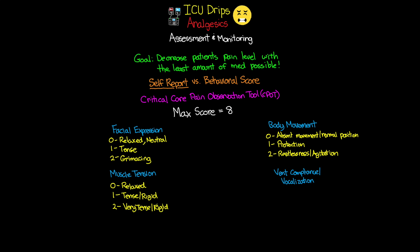For the last indicator, we divide it into two groups: intubated and extubated patients. For intubated patients, a score of 0 is tolerating the vent and any movement — no alarms activated, easy to ventilate. A score of 1 is coughing but tolerating: alarms may be activated but stop spontaneously. A score of 2 is fighting the ventilator — asynchronous with the vent, blocking ventilations, alarms constantly going off. You will know these patients when you see them; that vent will not shut up.